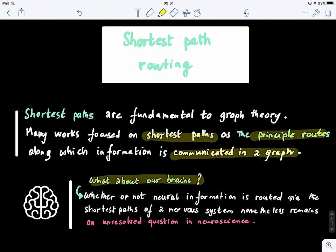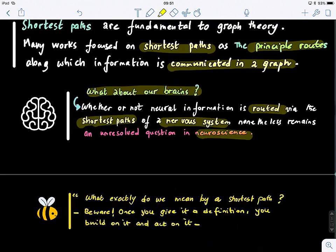What about our brains? Scientific studies have not come to very conclusive findings about whether our neurons follow the shortest path or not. How neural information is routed via our brain is still a bit mysterious. There are lots of theories - some hypothesize that they follow the shortest path, others think the nervous system might not work that way, so maybe a diffusion model is more convenient. This remains an unresolved question in neuroscience.